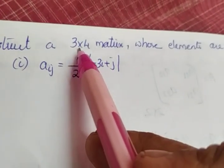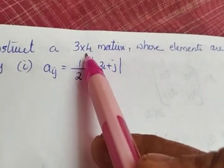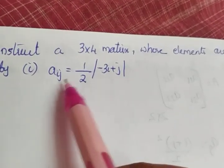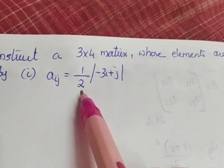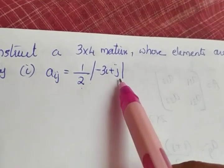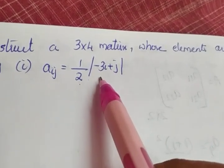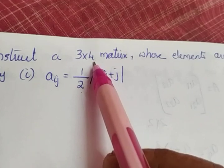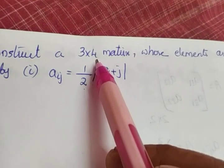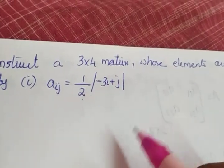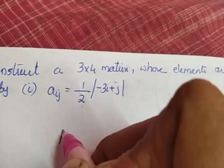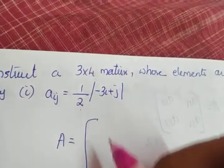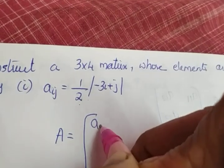The next question is to construct a 3 by 4 matrix whose element is given by Aij equal to 1 by 2 into modulus of minus 3i plus j. 3 by 4 means there are 3 rows and 4 columns. So if I am naming the matrix as A, it has 3 rows and 4 columns.